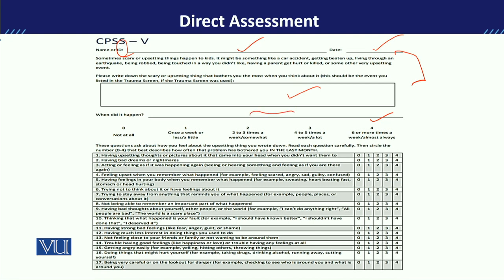There is some part that is qualitative. You can give information about what actually happened to your child. Then, if you look at the items on the left, there is a response scale with five points.